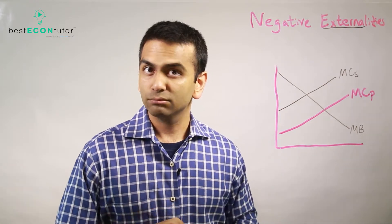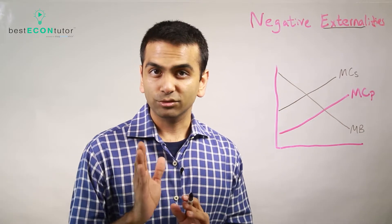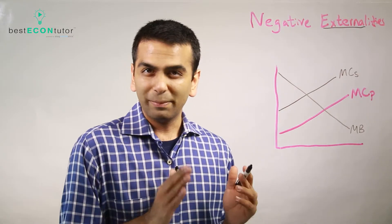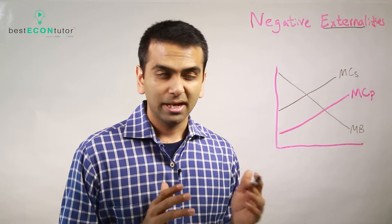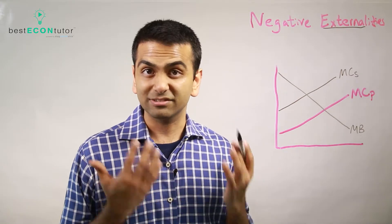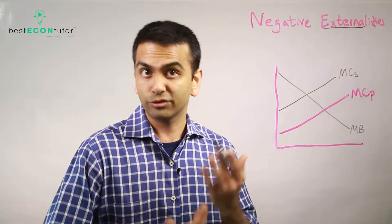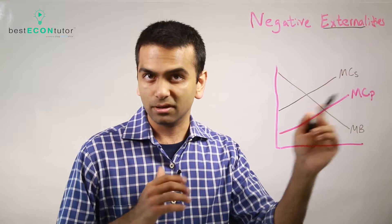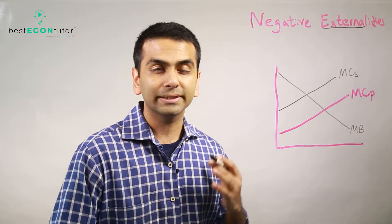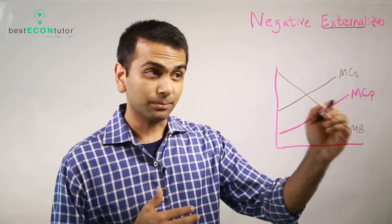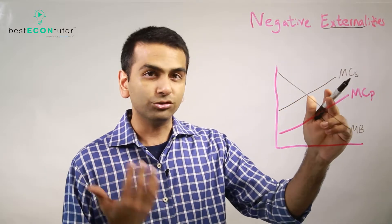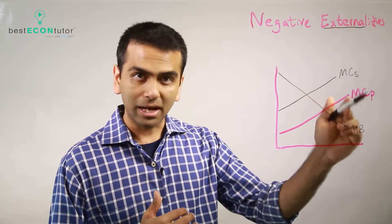So how do we represent that graphically? With negative externalities — when the external parties are affected in a negative way — we're going to have two supply curves. These are two supply curves that simultaneously exist. One is what the free market takes into account: the private cost curve. If you're buying cigarettes, you're not really taking into account secondhand smoke's cost, because we're assuming people aren't that altruistic naturally.